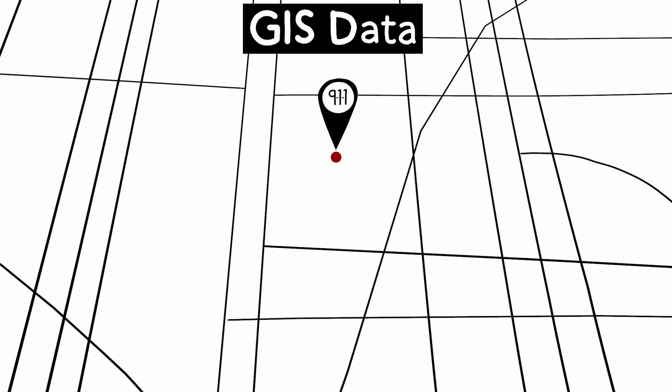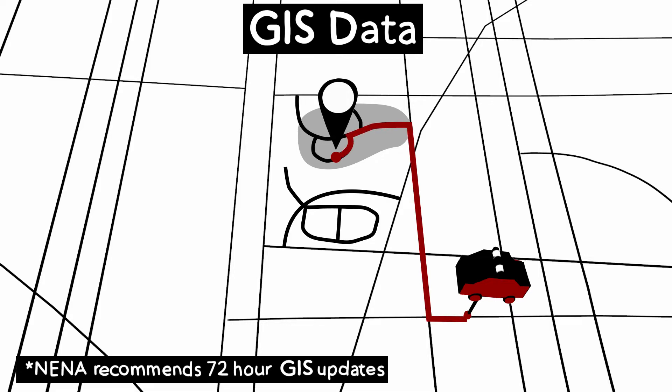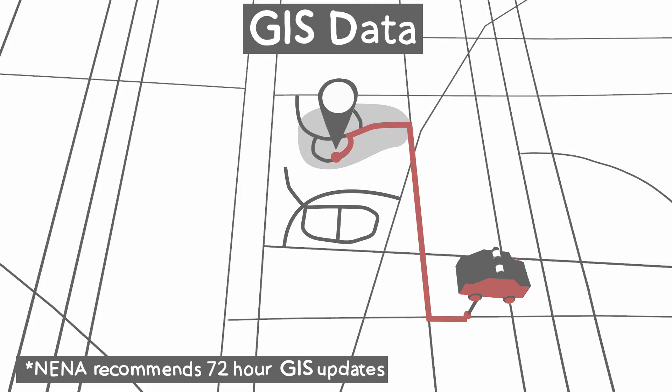But this relies on accurate data. The more data available to call takers and dispatchers, the more effective and timely the response. The ability to collaborate and share data between municipalities, regions, and groups is critical to making NG911 work.